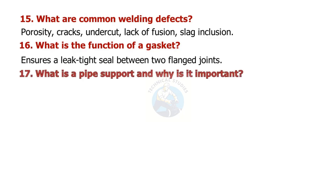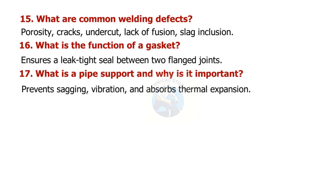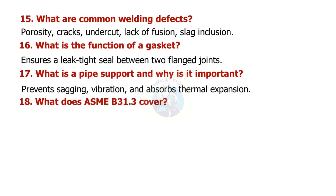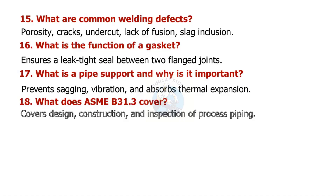What is a pipe support and why is it important? It prevents sagging, vibration, and absorbs thermal expansion. What does ASME B31.3 cover? It covers design, construction, and inspection of process piping.